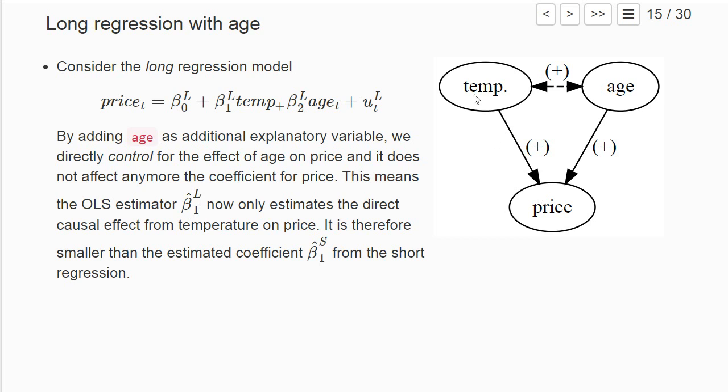In this example, the estimator β₁ˡ in the long regression will be smaller than the one in the short regression because this coefficient β₁ˡ doesn't contain this indirect positive relationship between temperature and price over the h variable.